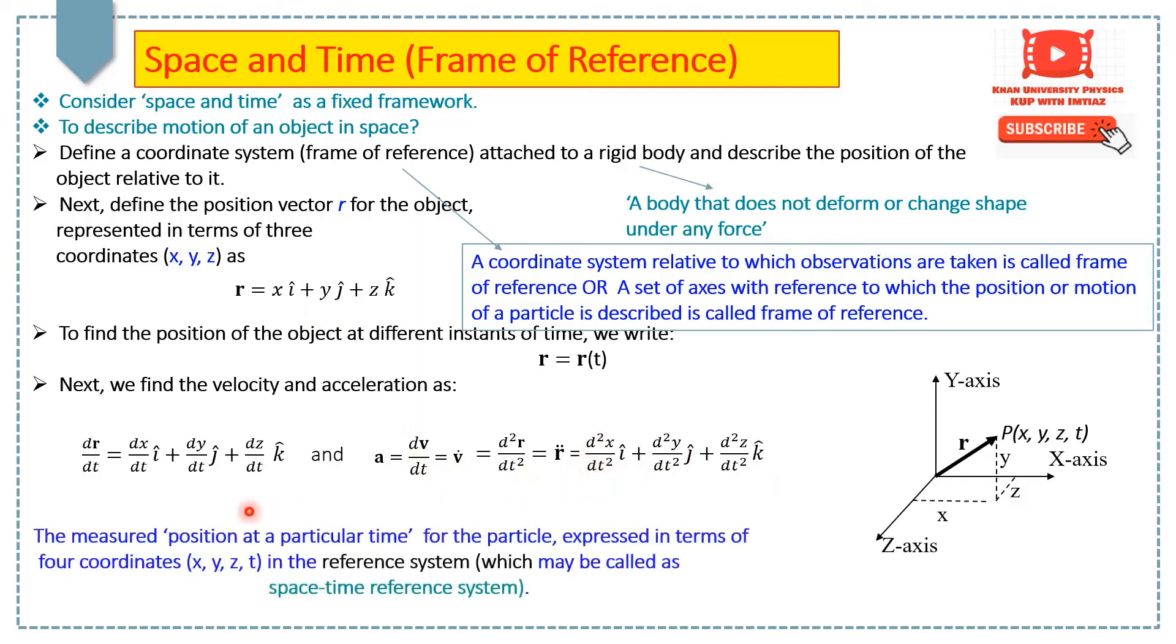So, in conclusion, we can say that the position of the object at any point of its path at a particular time is expressed in terms of four coordinates x, y, z and time t in this given reference system which may also be called as space-time reference system.